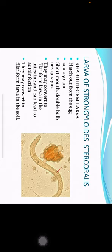The rhabditiform larvae hatch out from the eggs. The rhabditiform larva is about 200 to 250 micrometers long. It has a short mouth and double-bulb esophagus. The rhabditiform larvae may convert to filariform larvae in the intestine, which can lead to autoinfection. They may also convert to filariform larvae in the soil.